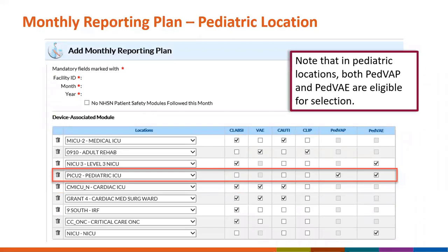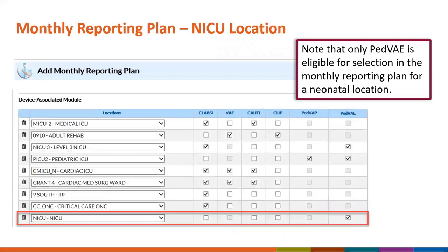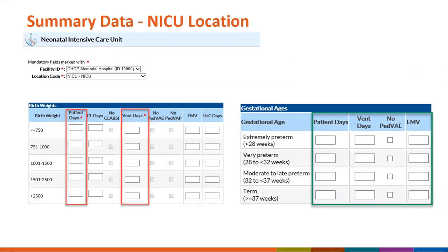In a pediatric location on the monthly reporting plan, PVAE is available to select while adult VAE is grayed out — only PVAE is available for in-plan reporting. When completing monthly summary data for a pediatric location, total patient days and ventilator days are required, and episodes of mechanical ventilation is optional. In a NICU location, the same applies: PVAE can be selected, adult VAE is grayed out, and summary data requires patient days and ventilator days broken down by birth weight categories, with an optional gestational age breakdown.